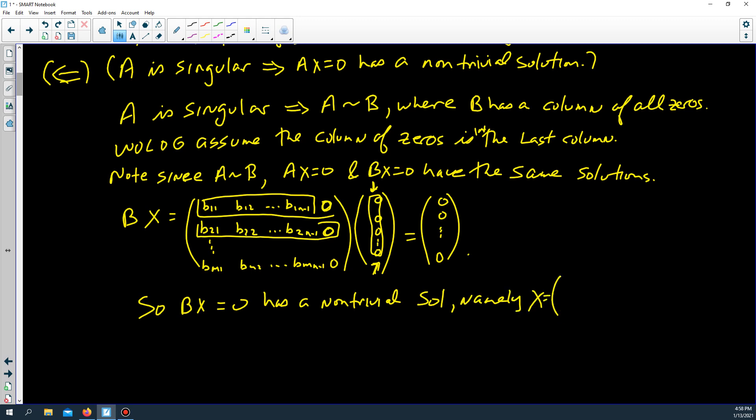So Bx equals zero has a non-trivial solution. Namely, x is equal to lots of zeros, lots of zeros and then the number seven or pi or 93 or the log of three halves. Just put a non-zero entry at the end.